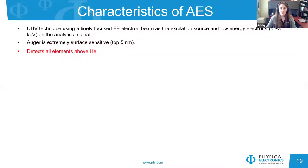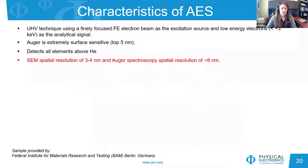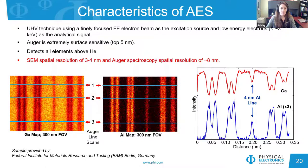AES can detect all elements above helium. When we look at the atomic number of elements versus their respective Auger yields, we see that there does exist an Auger transition with a high yield from most elements across the periodic table. AES can achieve an SEM spatial resolution of about 3 to 4 nanometers and an elemental mapping spatial resolution of about 8 nanometers. The example shows a gallium arsenide-aluminum arsenide superlattice, and line scans reveal that we can distinguish a 4 nanometer aluminum layer, putting Auger at the forefront of surface analytical techniques with respect to nanoscale spatial resolution.